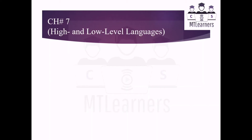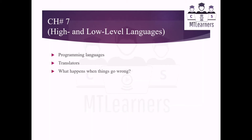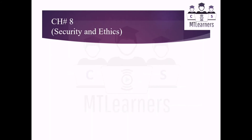Chapter 7 is High and Low Level Languages. Different programming languages will be of different natures — some will be high level languages, some will be low level languages. Which languages need translators and which translators are used to convert different programming languages will be discussed, and then what happens when things go wrong will all be covered in this chapter.